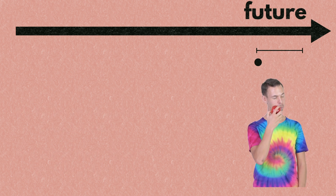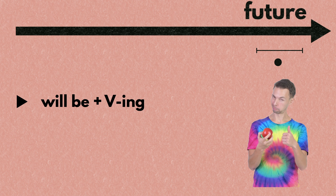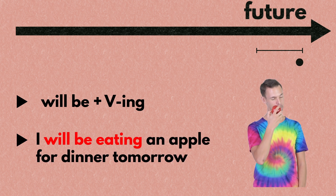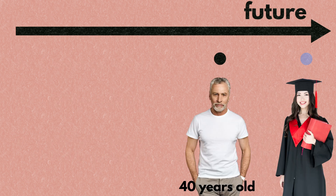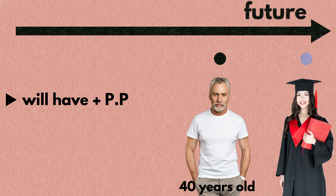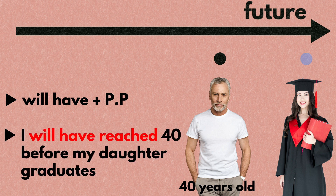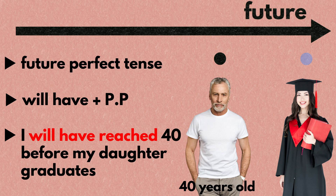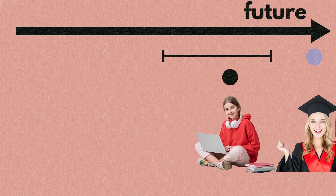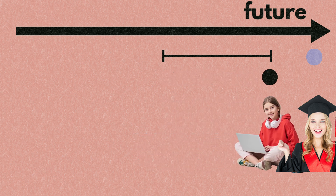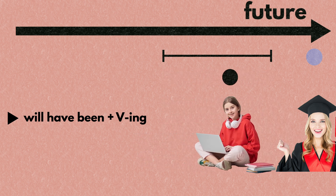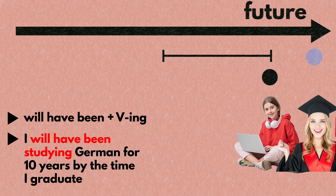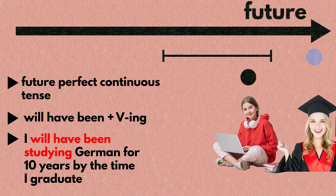If something will be ongoing and unfinished at a future point in time, put will be and add the ing form of a verb, as in I will be eating an apple for dinner tomorrow. This tense is called the future continuous tense. If you are talking about a future action that will happen before another future action, put will have and add a verb in its pp form, for instance I will have reached 40 before my daughter graduates. This is called the future perfect tense. Lastly, if a future action started before another future action and continued until it, put will have been with the ing form of a verb, as in I will have been studying German for 10 years by the time I graduate. This is called the future perfect continuous tense.